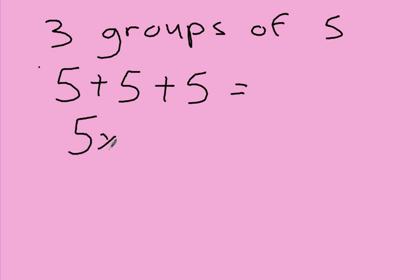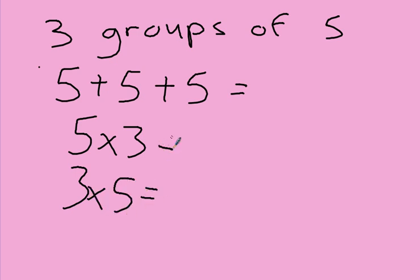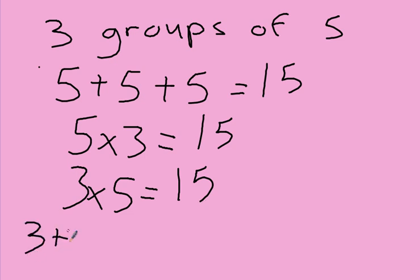Can somebody tell me a multiplication sentence? There are two of them we could do. You can go five times three, or three times five. Who can tell me what that answer is? Fifteen. So five plus five plus five, five times three and three times five — I could also go three plus three plus three plus three plus three.